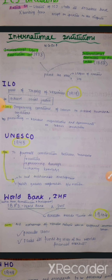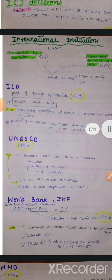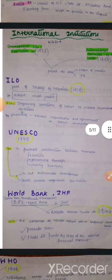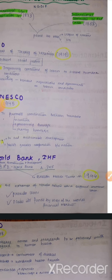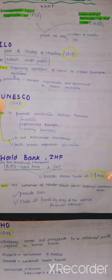Then we come to the Bretton Woods Twins — World Bank and IMF. Yeh dono ek saath isse kehte hain — Bretton Woods Twins. It was established in 1944. World Bank pehle isse kehte hain International Bank for Reconstruction and Development — IBRD. Aur IMF matlab International Monetary Fund. Its aim is to aid the economies of various nations which suffered immense losses due to the Second World War and colonization. How does it improve conditions? By providing loans to these countries and by raising funds. However, IMF and World Bank are quite selective — they promote the interests of the Western world, like Europe and the UK, and are not really neutral.